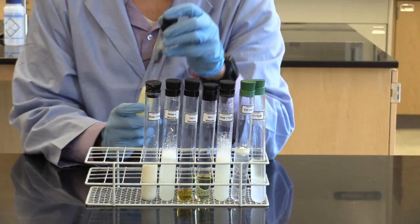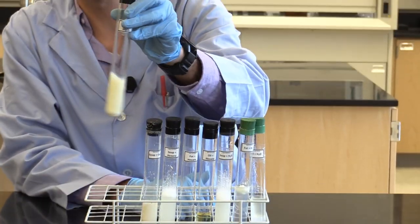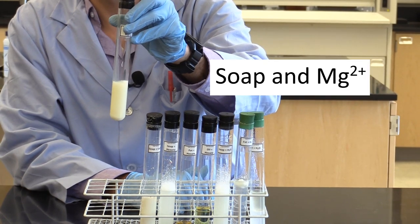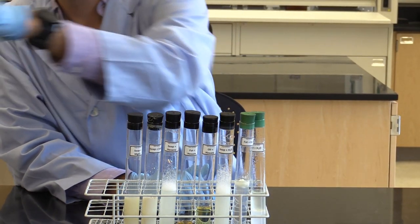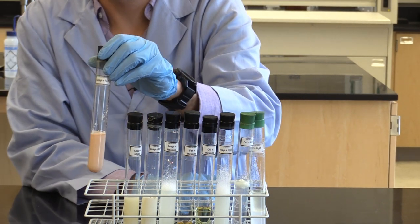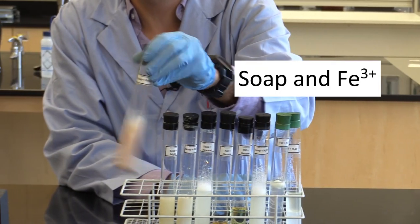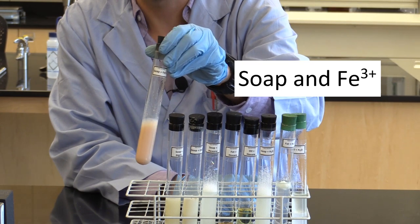Next, we have soap that contains magnesium ions. It also forms a white mixture. Finally, here is soap mixed with iron 3 ions, which is extremely insoluble, forming a milky red mixture.